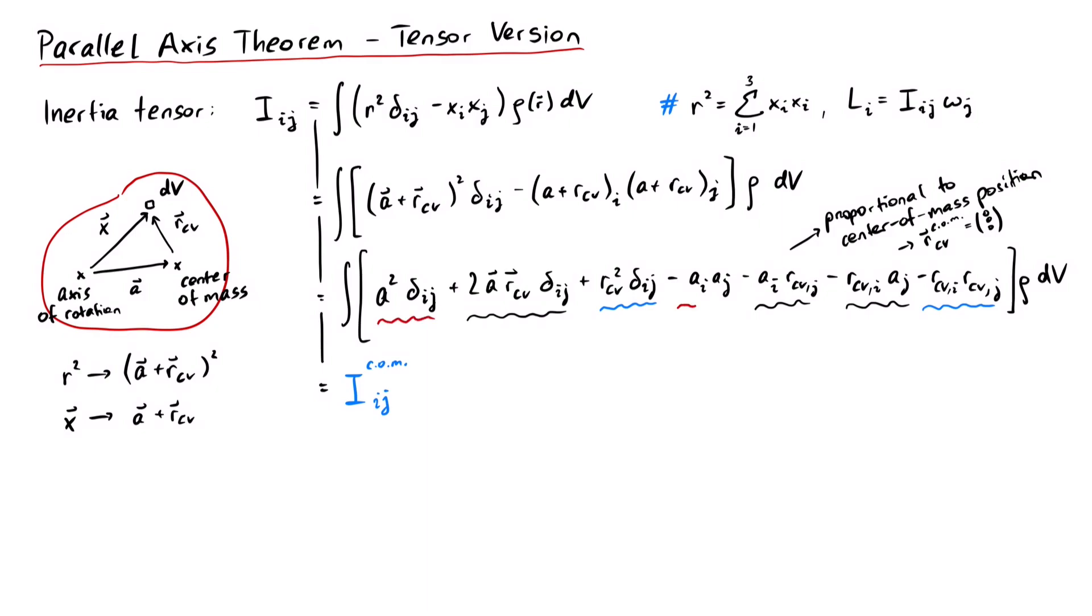Lastly, these two terms remain and give us the inertia tensor for a point particle at a distance a from the axis of rotation.